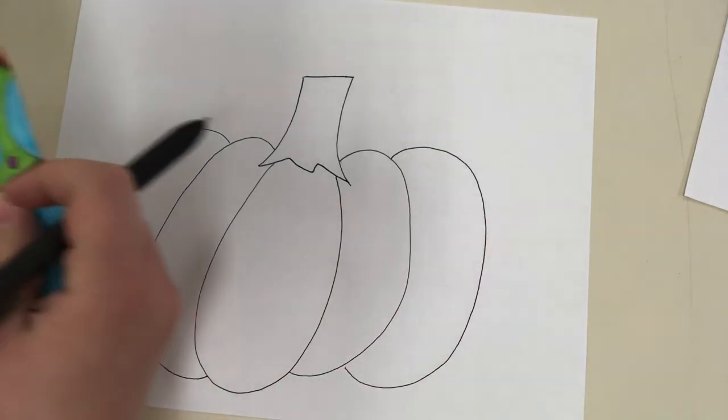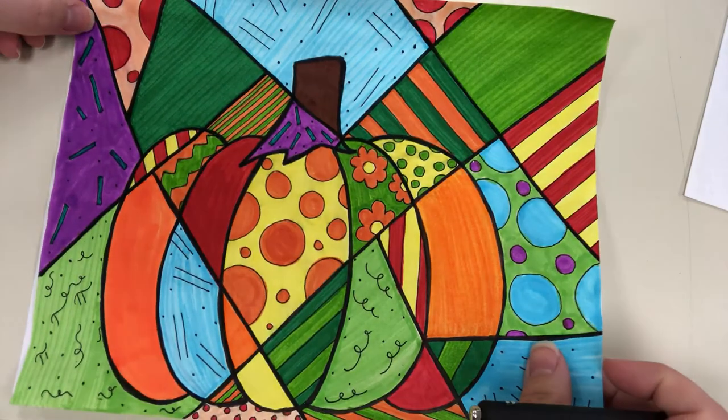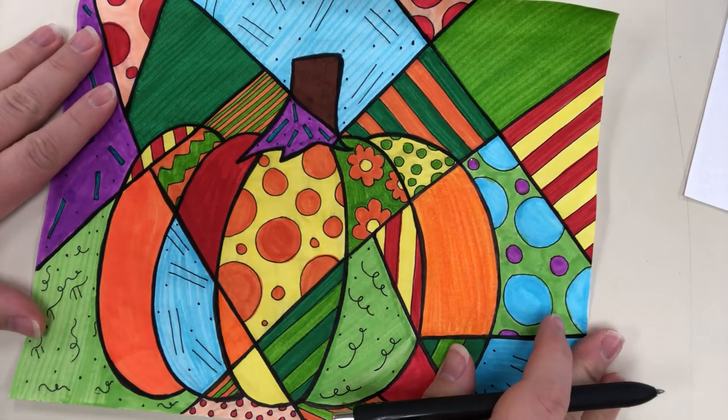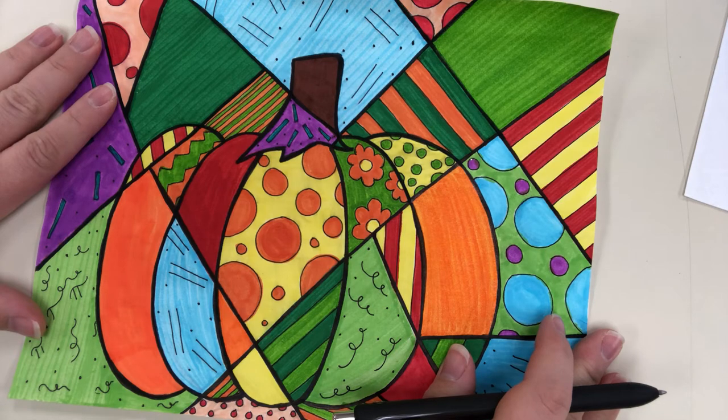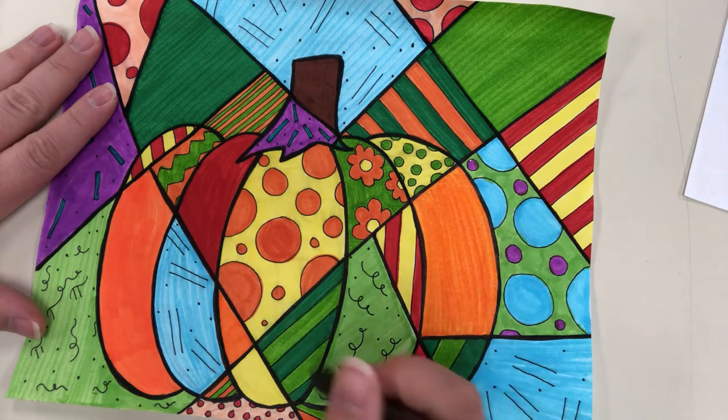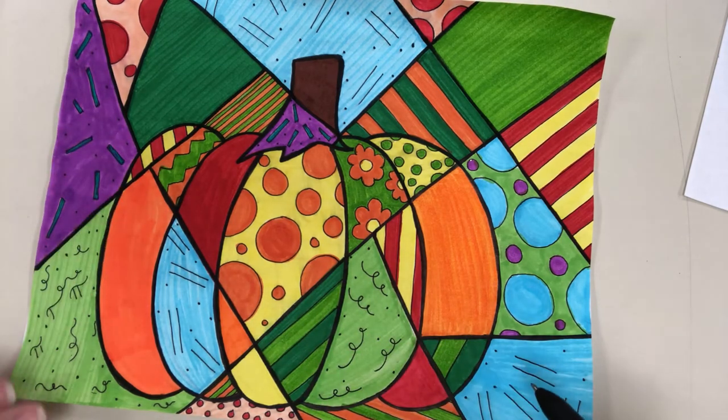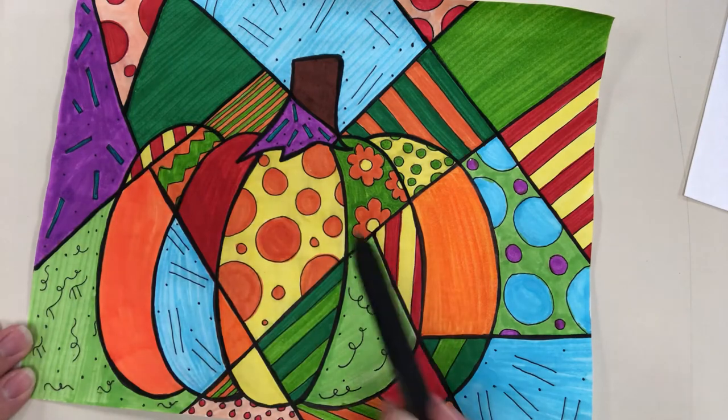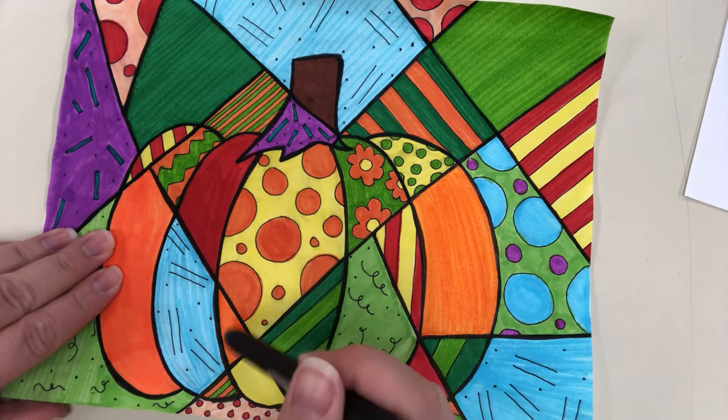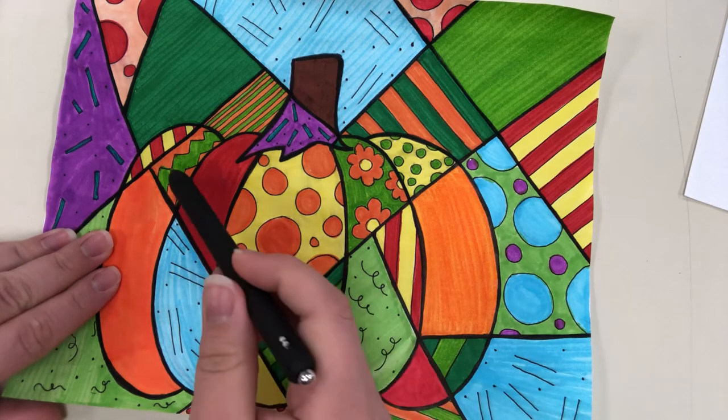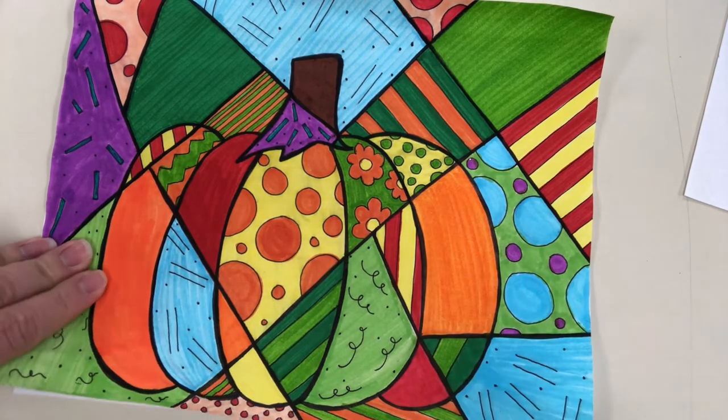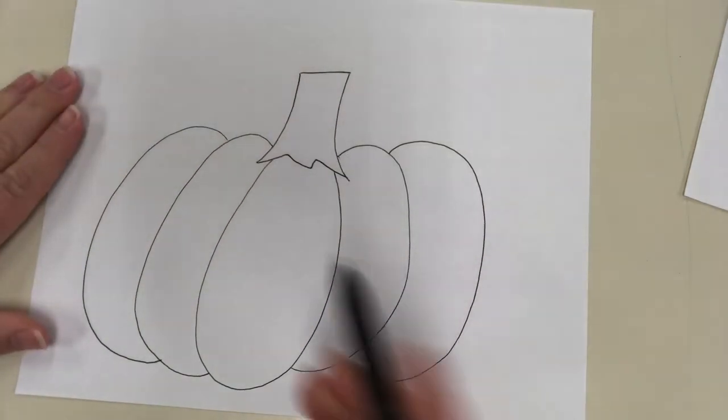Now what Romero Brito likes to do is break things down into panes. A pane is kind of like in a stained glass window where they're broken into sections. You can see that this middle oval section of my pumpkin is not just one pattern, it's already broken up into sections. Now how to do this, there's no real wrong way to do it, you just draw lines through your picture kind of like chopping it up.